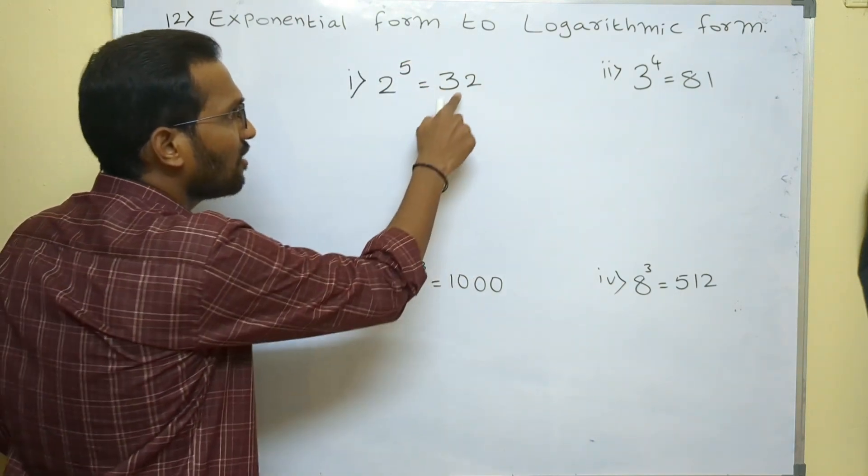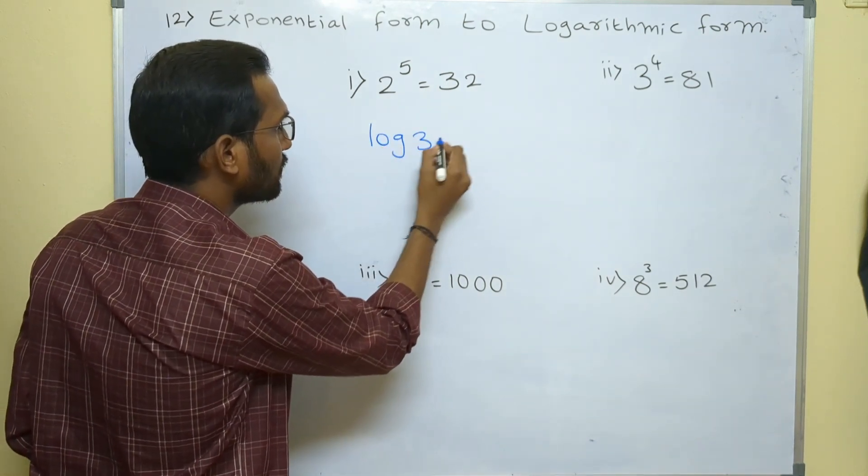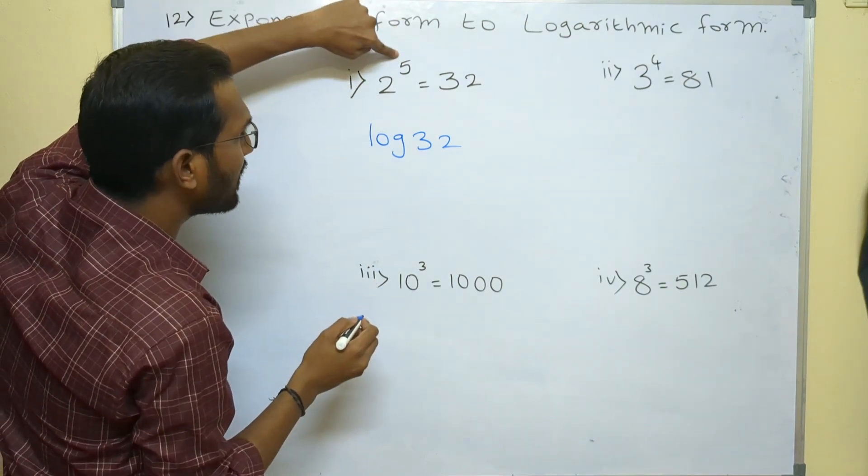What we need to do is for the answer, apply log. Log 32 - in 2 power 5, base is 2 and power is 5.